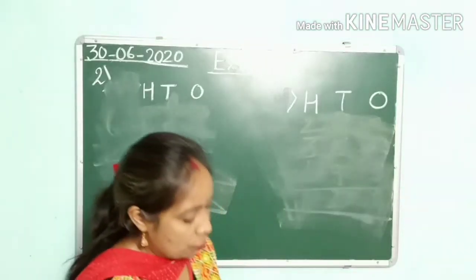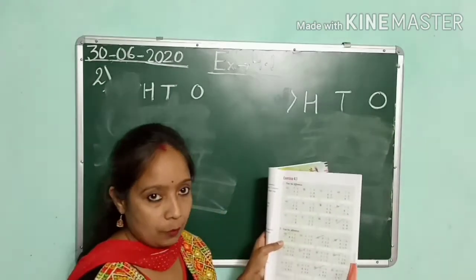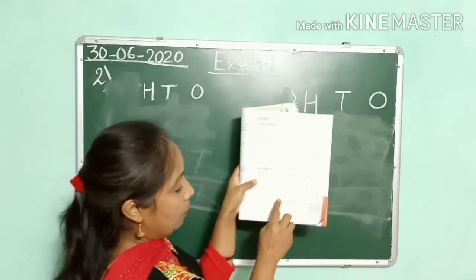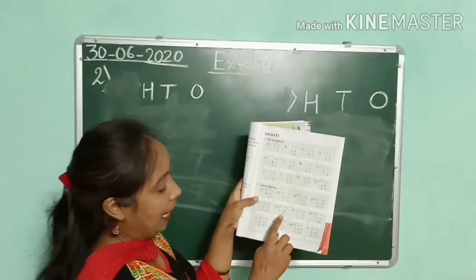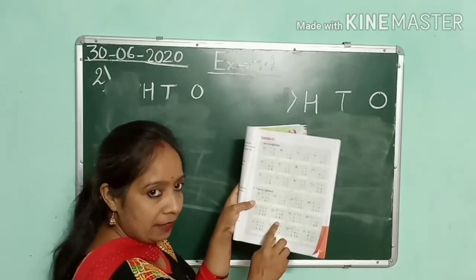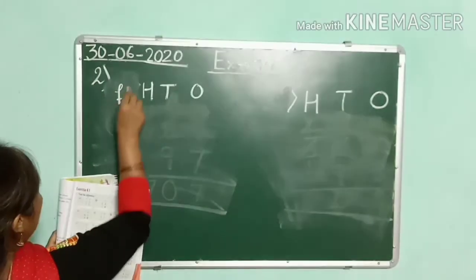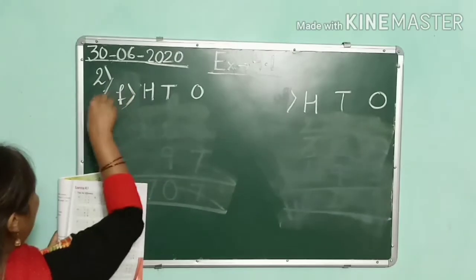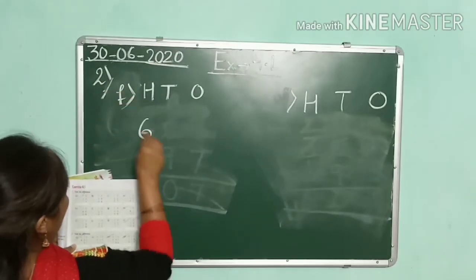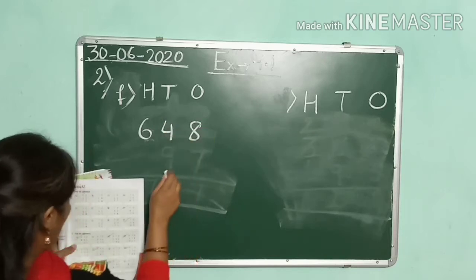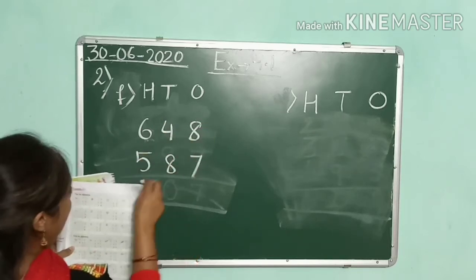Now I am taking question number F. Here in F number, children, we have to subtract 648 and 587. I am going to write the question here — F number: 648 and 587.